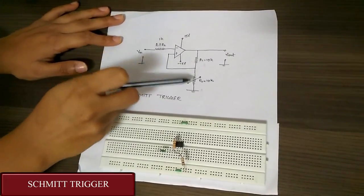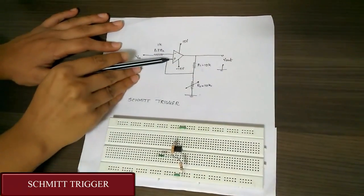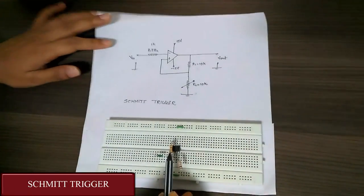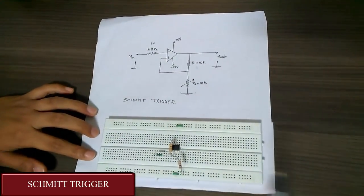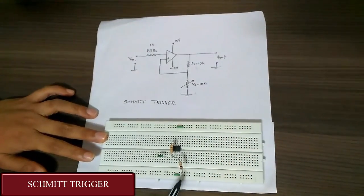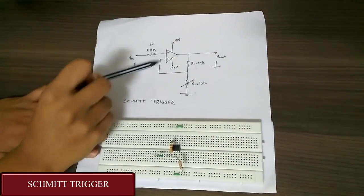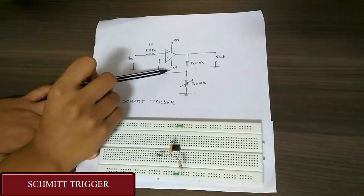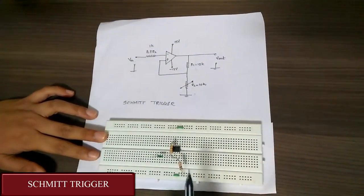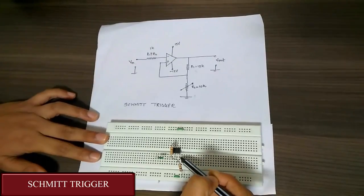And 10K resistor is connected between third terminal and the output which is sixth terminal. You can see this is 10K resistance. And another 10K is connected between third terminal and ground. This is that 10K. We are giving plus 15 and minus 15 volt at seventh and fourth pin of IC respectively.